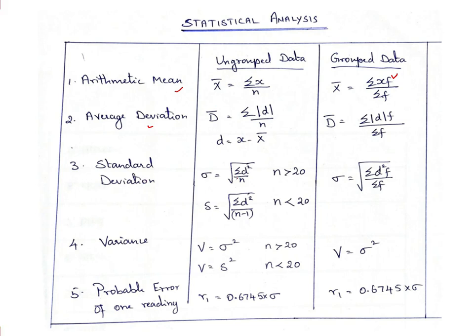For standard deviation, for ungrouped data, we have two formulas: one when n is greater than 20 and one when n is less than 20. That is a very important thing to remember. But for grouped data, there is no such classification, so we use the same formula for any number. Variance is always the square of the standard deviation.